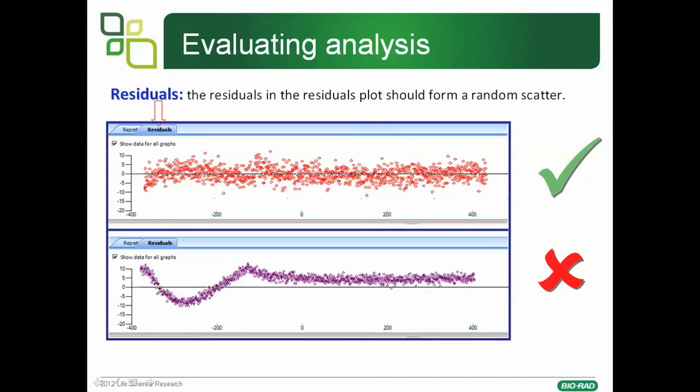Another way of examining the fit is to look at the residuals. If you click on the residuals tab next to the plot, you should see that the residuals are randomly scattered around zero, as in the red dots — there is no trend, just representative of random noise. As opposed to the lower plot, where you can see that there is a pattern to the residuals, with parts where the model underestimates and parts where the model overestimates the rate constants.